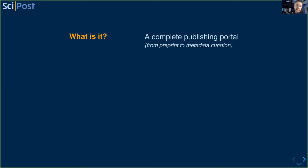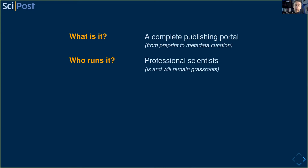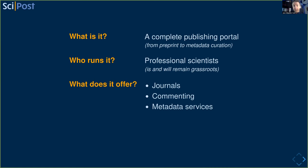SciPost is meant to be a complete publication system - everything academics need to do the publishing process in all its steps and facets. The important thing is that the people who run it, who determine how it's built and where it's going, are professional scientists - people with stable jobs in the field. It's really a grassroots thing, and I intend on keeping it that way. We offer primarily a set of publication venues - journals, of course - but also commenting on existing literature and metadata services. If you summarize the whole thing in two words, it would be openness and quality.